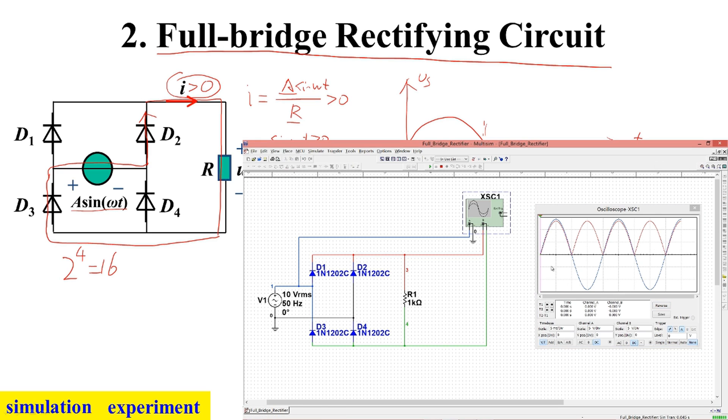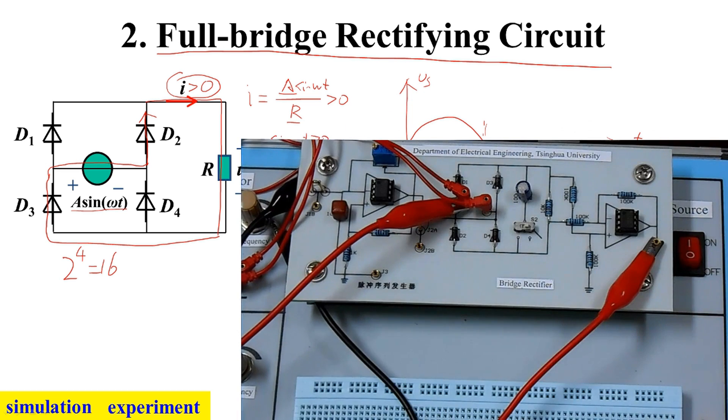The blue input signal is the standard sine wave. The red output signal is in agreement with the input signal in the positive half cycle. In the negative half cycle, the output signal is the reverse of the input signal. The output signal is a DC signal with continuous fluctuations. It realizes the function of full-bridge rectification.